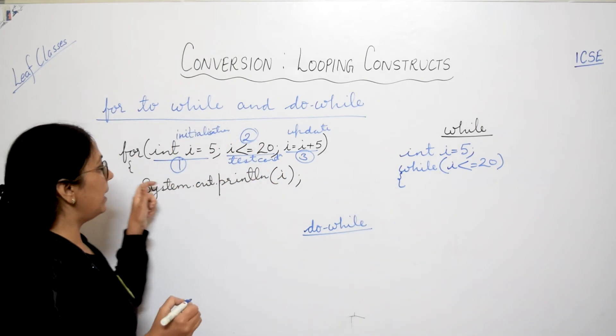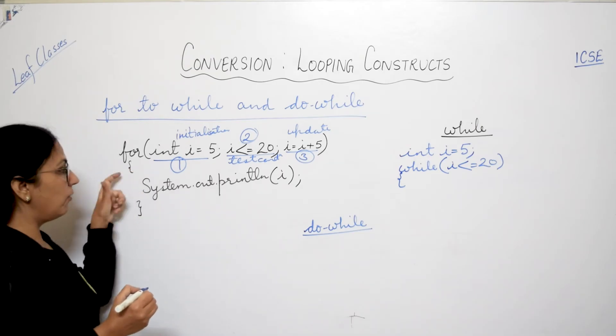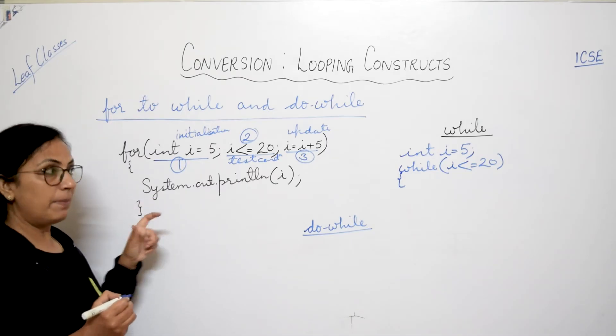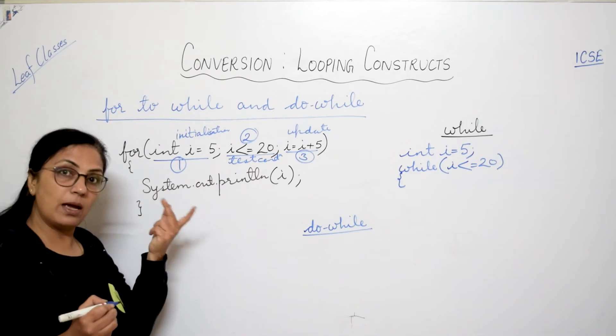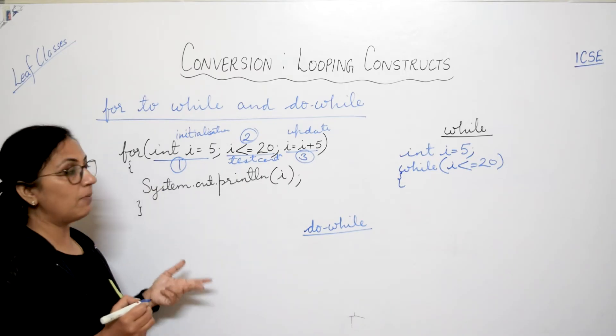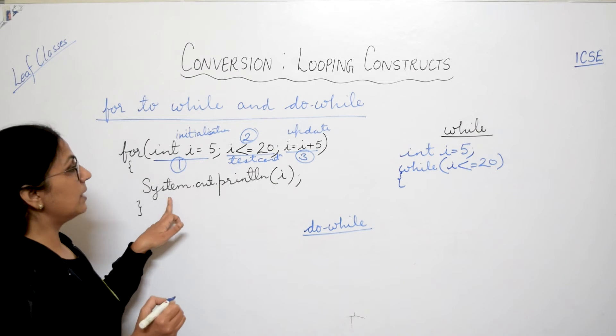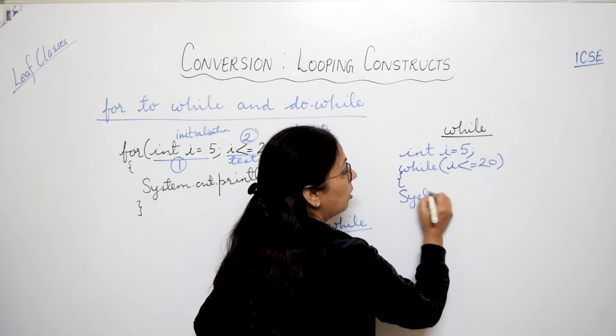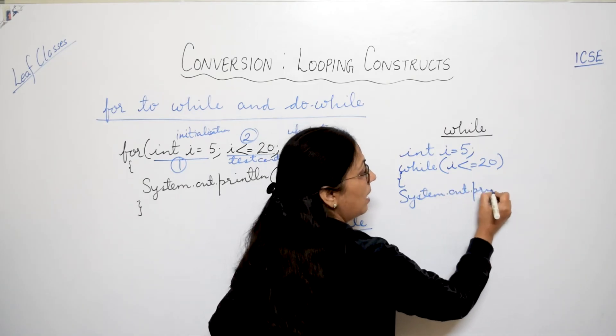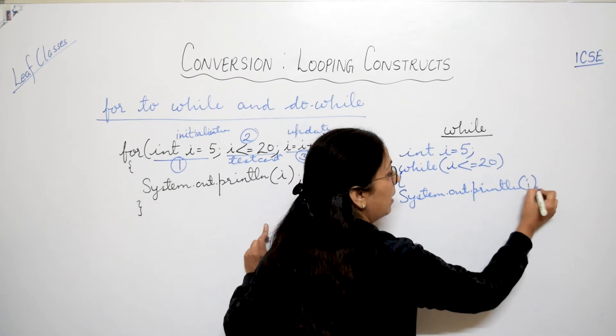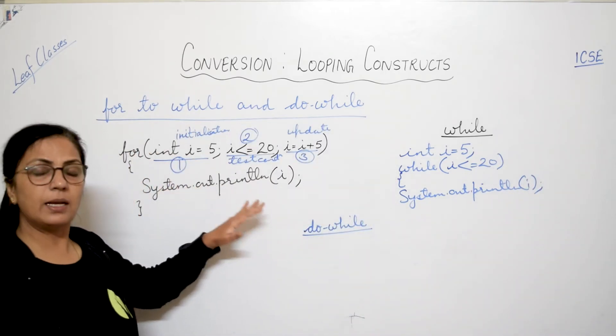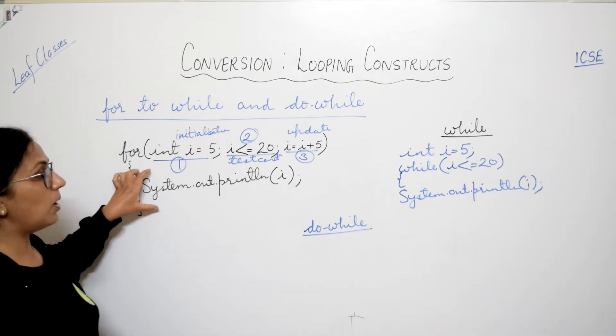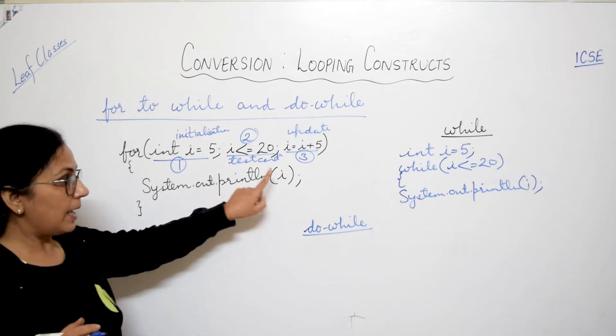Body of the loop mein kya likhoghe? Jo is ke under hai, within the pair of curly braces whatever is there. Agar ek statement hai to curly braces are optional, but while me humko dena padheega kyaunki humko at least two statements minimum moha pe likhne honghe in most of the cases. So ab isme hum kya likhenghe? System dot out dot println, whatever is written in the question, exactly same thing you will write. Any expression, any calculation, anything whatever is written within this body you have to write here.